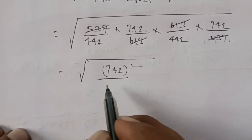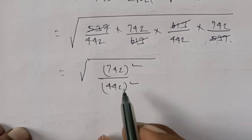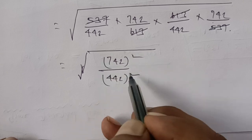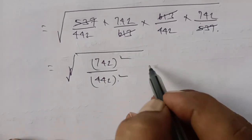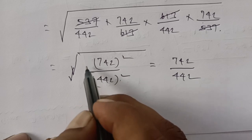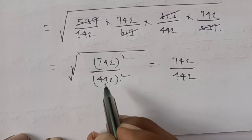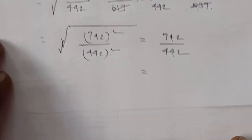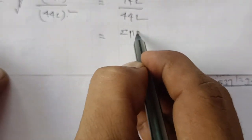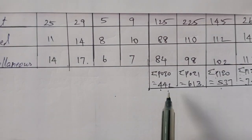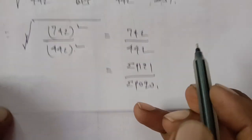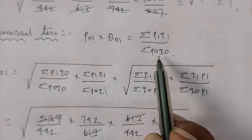After substitution, we get square root of (537/442 × 742/613) × (613/442 × 742/537). The 537 values cancel, and the 613 values cancel. The square root of (742/442)² remains. Square root cancels the square, leaving 742/442, which equals ΣP1Q1/ΣP0Q0. Factor Reversal Test is proved.